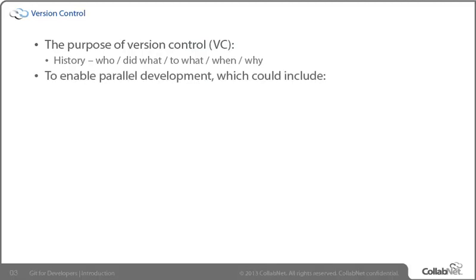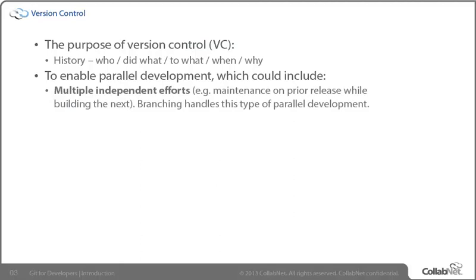The second purpose is to enable parallel development, and that comes in two flavors. First, we have the traditional situation where we have more than one line of development happening at the same time. The typical example is that we have to put out fixes for the production version that's out, while at the same time working on a new release with new functionality. But the key point is we can't have those cross over — we can't have a half-done feature ending up in production. So we've got to isolate the two lines of work, knowing that we want to put them back together again. That's traditionally handled by branching, and the same will hold true of Git.